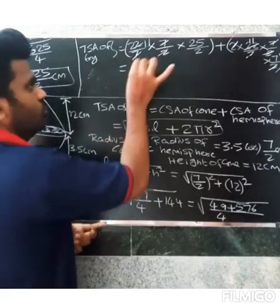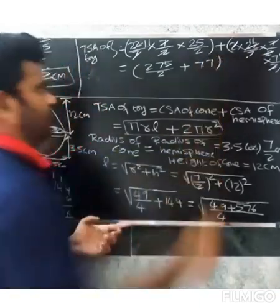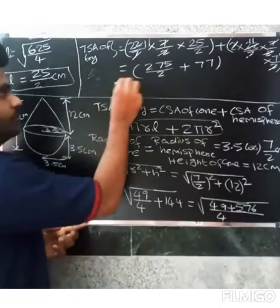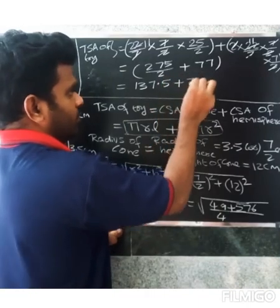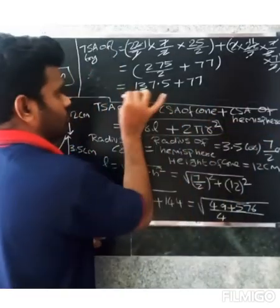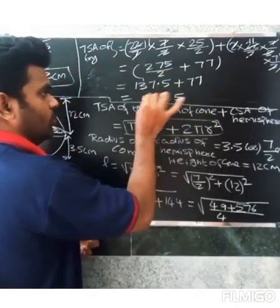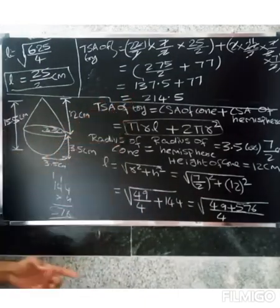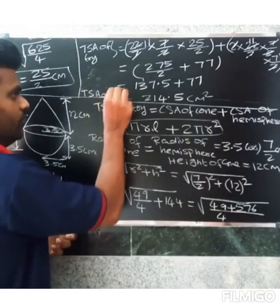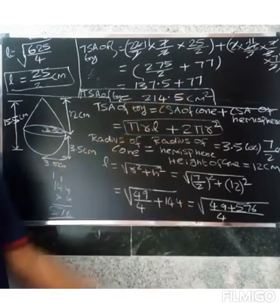So 275/2 plus 77, which gives 137.5 plus 77 equals 214.5. Therefore the total surface area of the toy equals 214.5 centimeters square. Thank you.